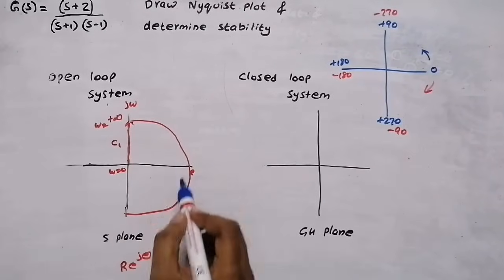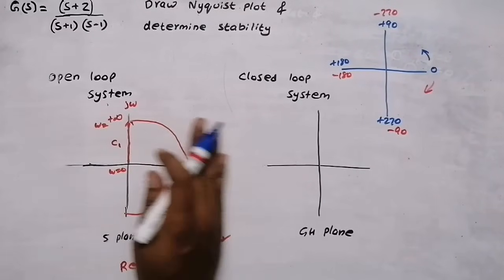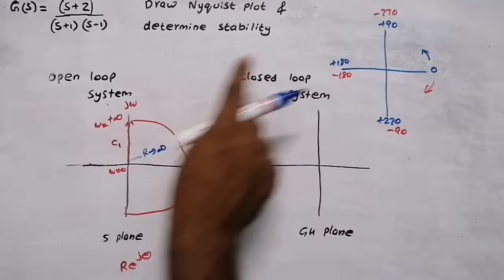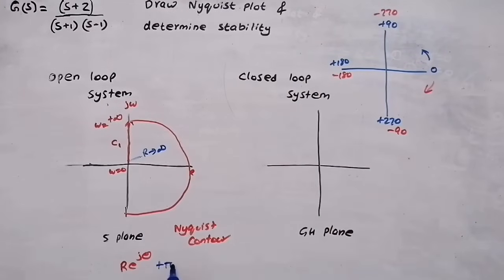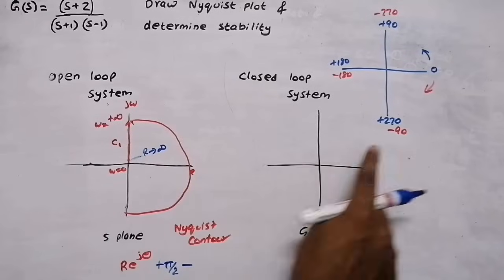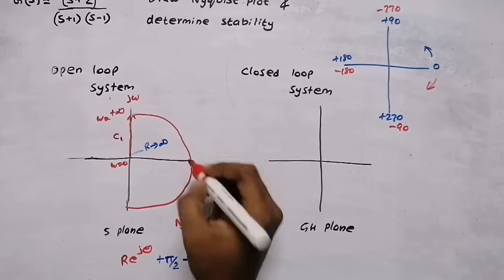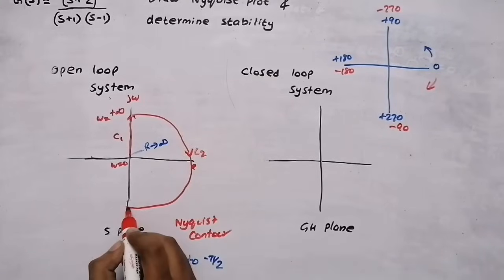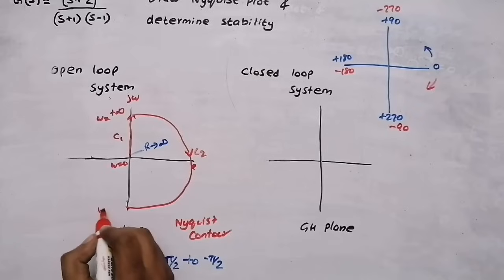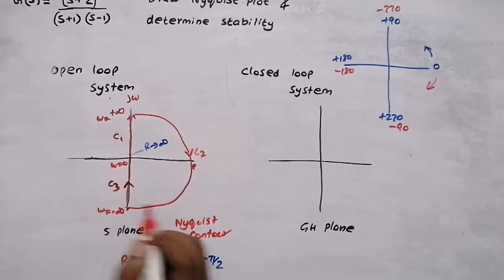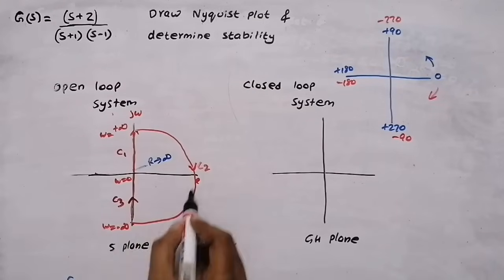For this circle the radius R will be infinity because we cover the entire right half plane. Theta starts from plus 90, that is plus pi by 2, going to minus 90, that is minus pi by 2. That is the angle theta for C2. Then from omega equal to minus infinity to omega equal to 0 is my third region C3. This is the Nyquist contour of the system.